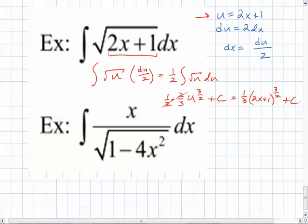What do you think u is going to equal in this second example? 1 minus 4x squared. So let's try it. u equals 1 minus 4x squared. What is du going to be equal to? The negative? Negative 8x dx.